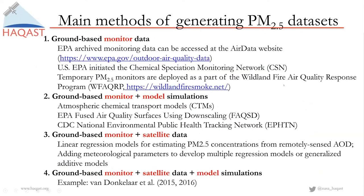In this field for generating PM2.5, there is not just one method that serves all purposes. We can summarize them into four major methods. The first is to rely on ground-based monitors — for example, you can download the EPA-archived monitoring data from the AirData website, and also download the EPA chemical speciation monitoring network, the CSN data. For smaller coverage during wildfire in California, there are temporary PM2.5 monitors deployed by the Wildfire Air Quality Response Program. These are the type of datasets that only rely on ground monitors.